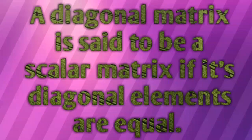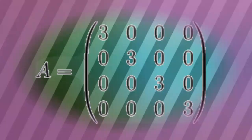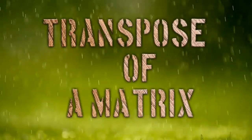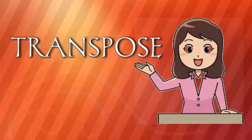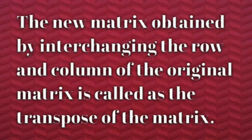This is the example of our scalar matrix. The next category we are going to see is the transpose of a matrix. Before that, we need to know about transpose — it means interchange. Let's see the definition of transpose of a matrix.